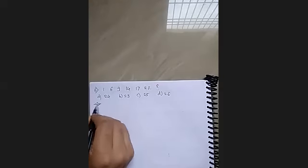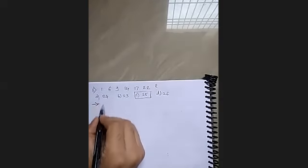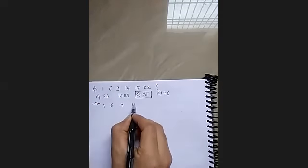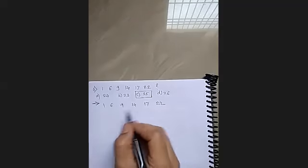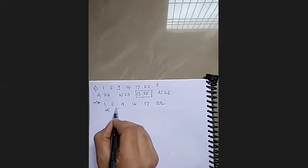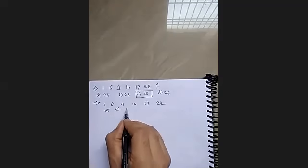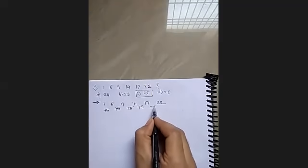Okay, most of you are writing option C, I think 25. So let's verify what will be the actual answer. So 1, 6, 9, 14, 17, 22. Right. Sometimes there can be different logic. So 1 plus 5 is 6, plus 3 is 9, plus 5 is 14, plus 3 is 17, plus 5 is 22.